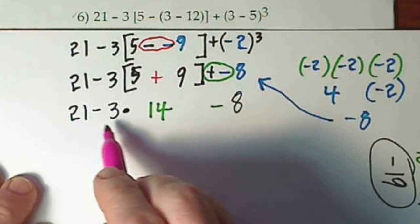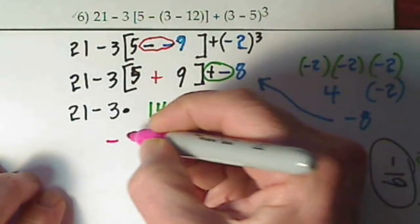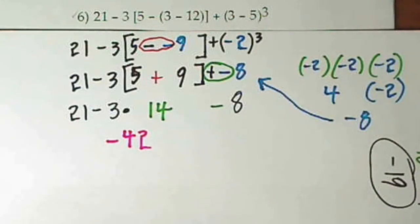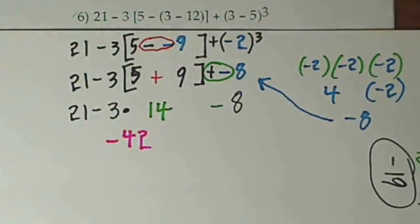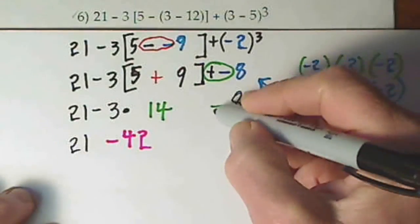Multiplication here. I'm going to say negative 3 times 14, that would be negative 42. Bring down whatever we haven't touched. 21 and this negative 8.